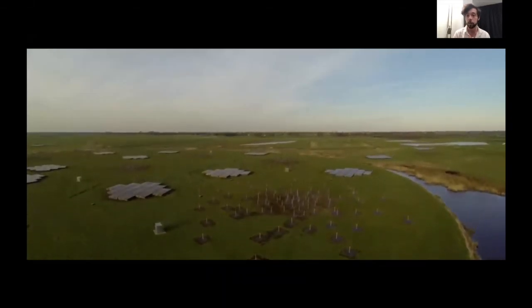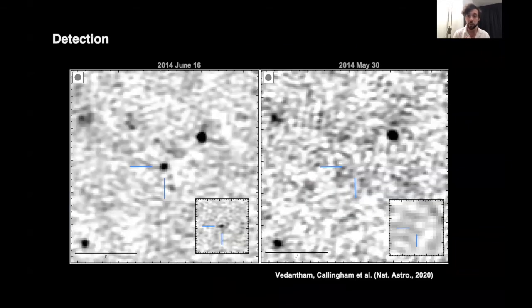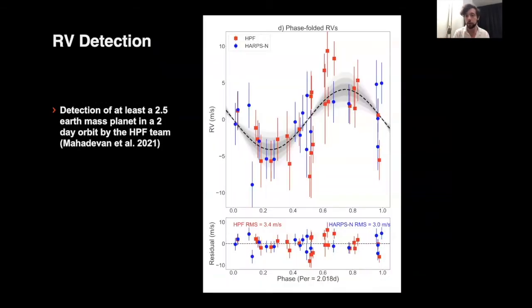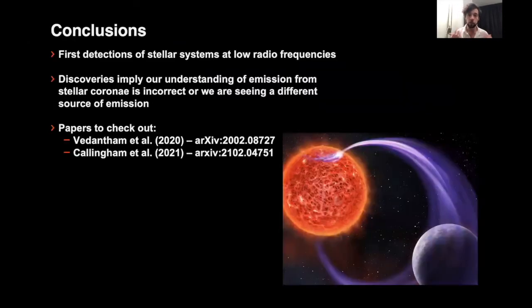This is our first detection of GJ 1151, an M dwarf system, which you can see appear on the left and disappear on the right between two different epochs. After modeling the radio emission, we found the best model that could fit is a scaled-up Jupiter-Io system where we replace Jupiter with the star and Io with a potential putative exoplanet of about Earth size in a one to five day orbit. Interestingly, the HARPS planet finding team recently detected an RV signal from this star of a roughly Earth-sized planet in a two-day orbit. So to conclude, we think we're seeing the first detections of star-planet interactions at low frequencies.